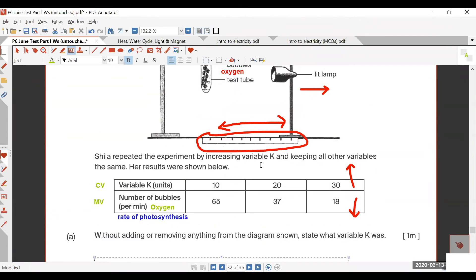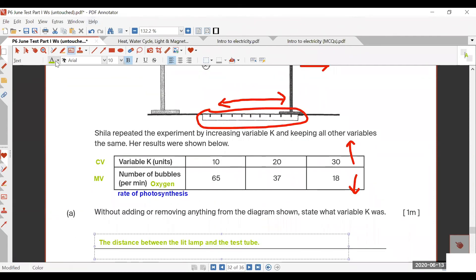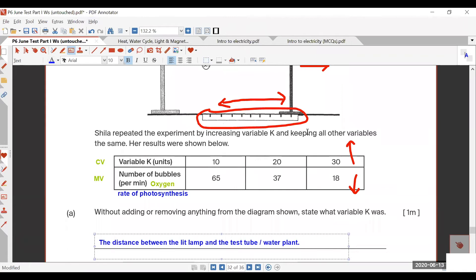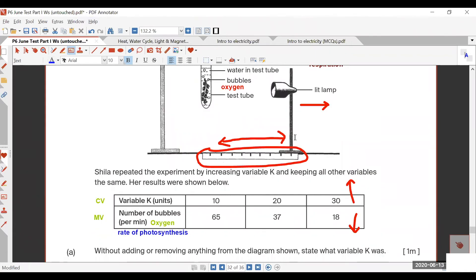The lamp and the test tube. You want to say the distance between lamp and the water plant? Can. It's the same thing, but the water plant is in the test tube, so I just use the test tube. You want to use water plant also, can. You'll get it correct.